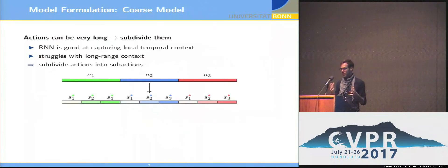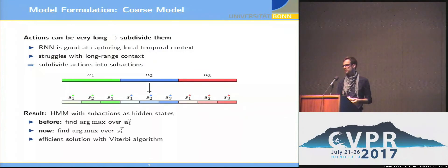The point with these RNNs is they are very good at modeling local temporal context, but actions in videos can be very long, several hundreds, even several thousand frames long. So neural networks usually struggle to model these long-term contexts. So what we do is introduce a coarse model, which basically is the idea of sub-segmenting each action class into multiple sub-actions. These sub-actions are hidden states, so basically we end up with a hidden Markov model formulation with sub-actions as hidden variables.